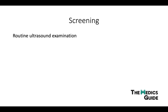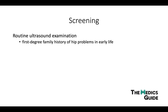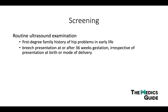Routine ultrasound screening is done, but only if the child meets at least one of these criteria: a first-degree family history of hip problems in early life — it doesn't have to be dysplasia specifically — breech presentation at or after 36 weeks, or multiple pregnancy. If any of these three apply, a routine ultrasound examination is performed, normally done around six weeks.